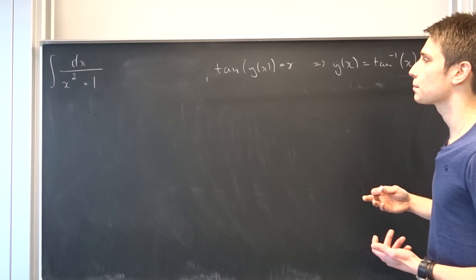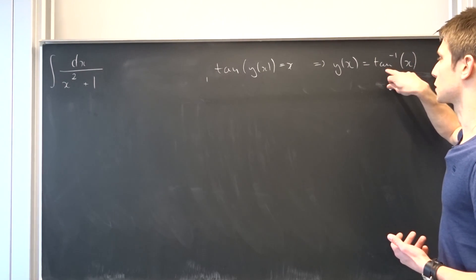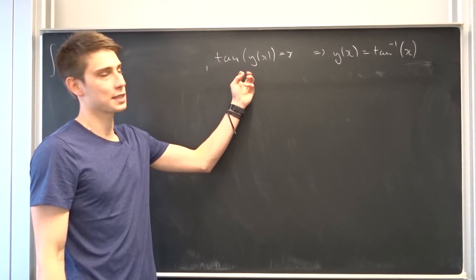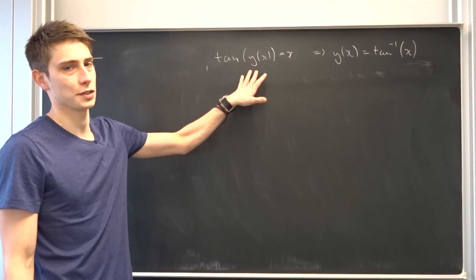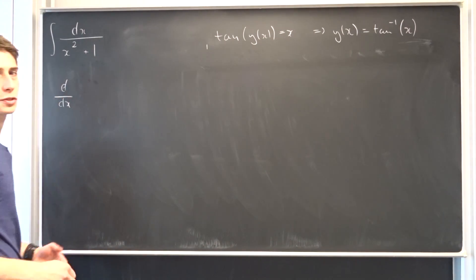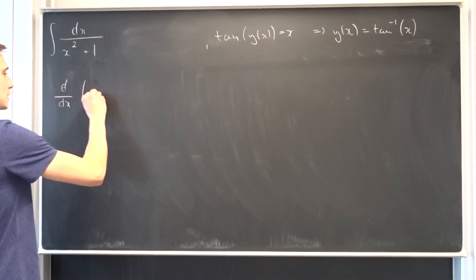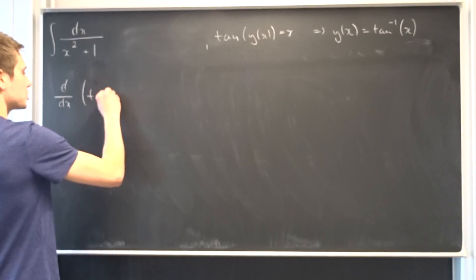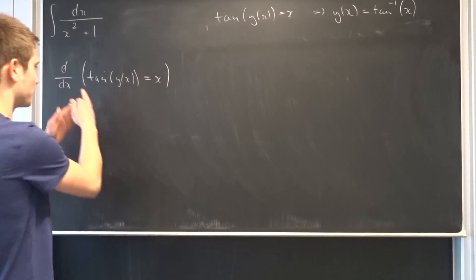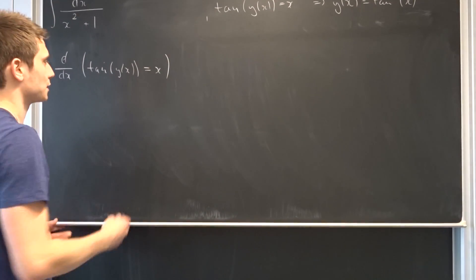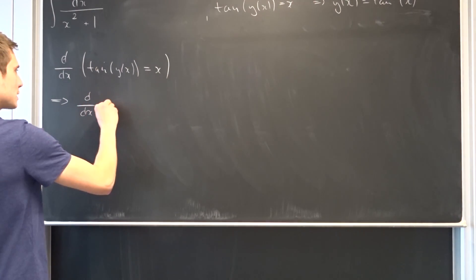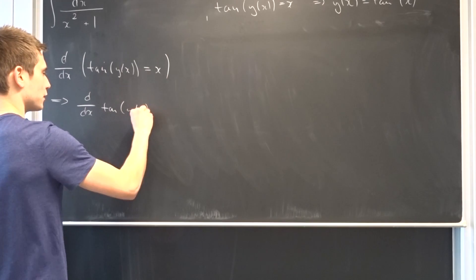Maybe you know where I'm going, but we are going to solve for this one. At first we are going to use implicit differentiation to play around with this term a bit. Implicit differentiation means we are going to apply d/dx on both sides — that's d/dx of the tangent of y in terms of x, equals x.